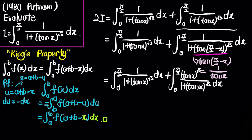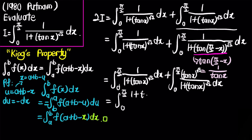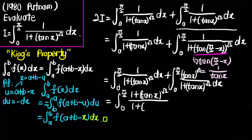Adding the two integrands, since the limits of integration are the same, the numerator becomes 1 plus tan^√2(x) and the denominator is also 1 plus tan^√2(x). This whole expression equals 1, so integrating 1 from 0 to π/2 gives π/2.